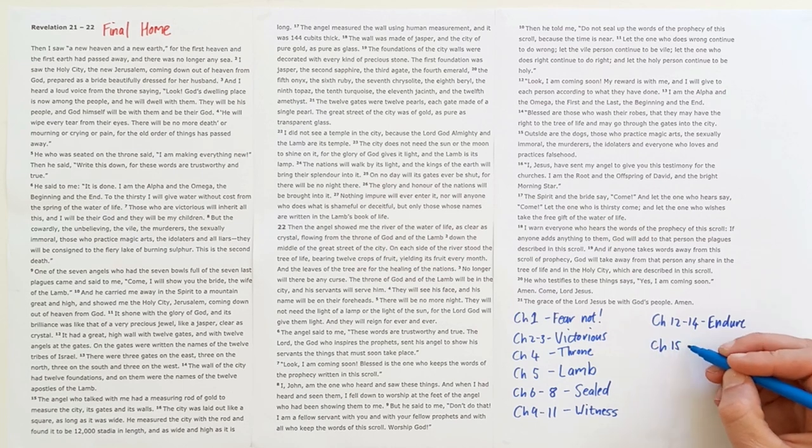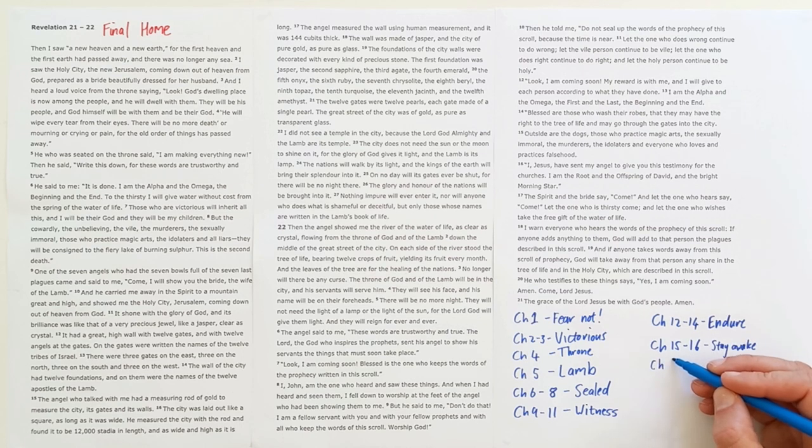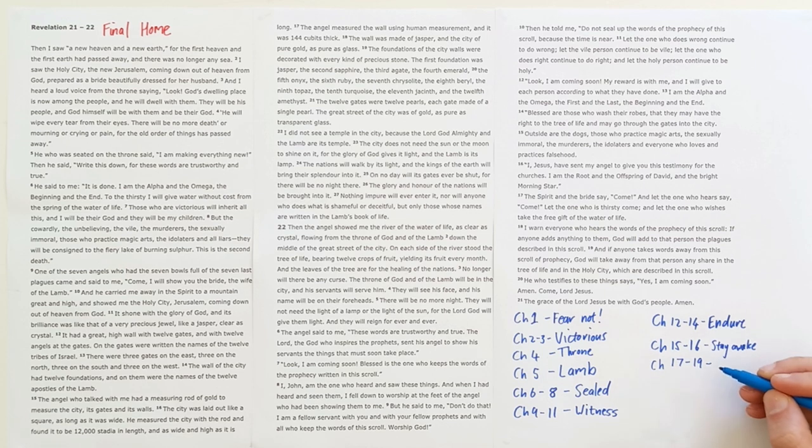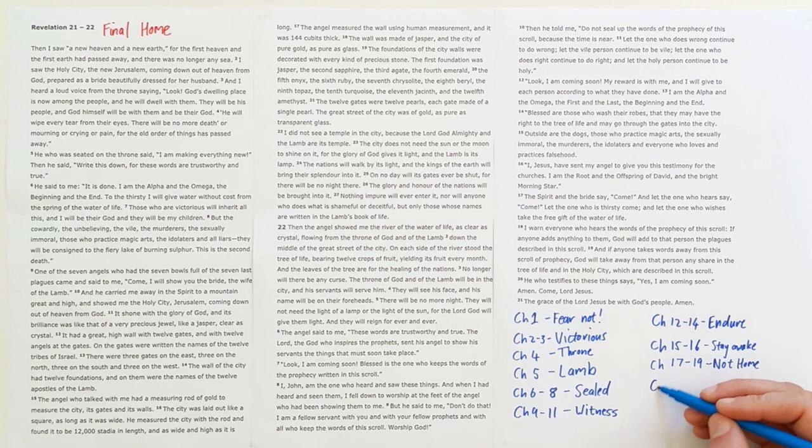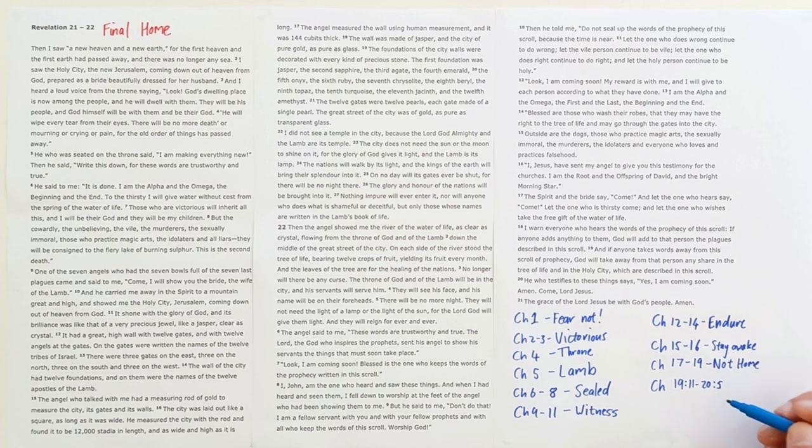In chapters 15 and 16 we saw this picture of final judgment of sinners and God's people were called to stay awake. In chapters 17 to 19 we saw the fall of Babylon, a society that has set itself up against God, and that was a reminder that this is not home. Babylon is not our home. Chapter 19 verse 11 to chapter 20 verse 15 showed us the final victory.